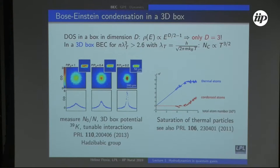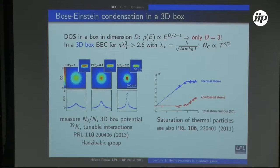In this setup, potassium atoms are used with a Feshbach resonance allowing very convenient tuning of interactions — including setting interactions to zero to observe textbook BEC without interactions. In this case you very nicely see the saturation of excited states: the number of particles in the ground state and in the excited states are plotted as a function of total atom number at a given temperature, clearly showing saturation of thermal atoms when you exceed the critical number. This is a beautiful illustration of saturation of the excited states.